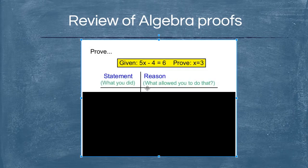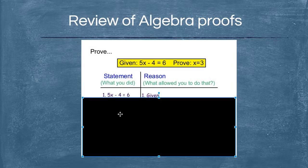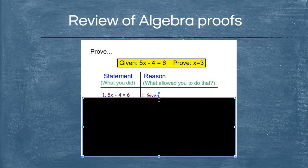Go ahead and set up your T-chart or two columns: statements on the left — that's what you did — and reasons on the right, meaning what property allowed you to do what you did. We all know how to solve a two-step equation; we may or may not remember the reasons why we're allowed to. The first thing you always include in your proof is the given information, written exactly as it was given to you. Your reason is simply the word 'given.'